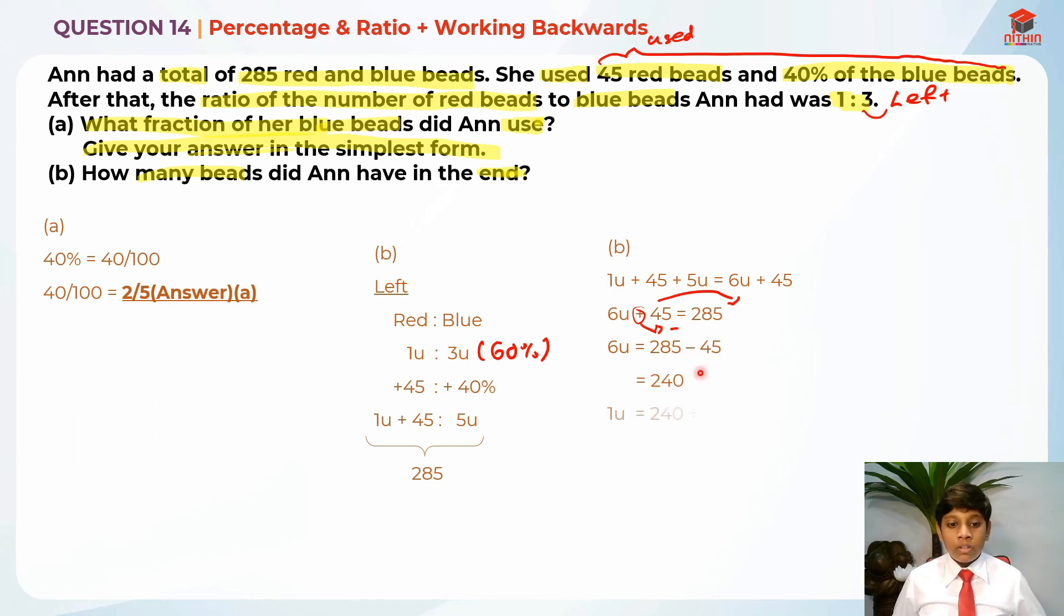Now we find 1 unit. So 1 unit is 240 divided by 6, which is 40. We need to find at the end, right? At the end, it's actually 1 unit plus 3 units, which is 4 units. So we just need to find 4 units. 4 units is basically 40 times 4, which is 160. And 160 is the answer for part B for question 14.